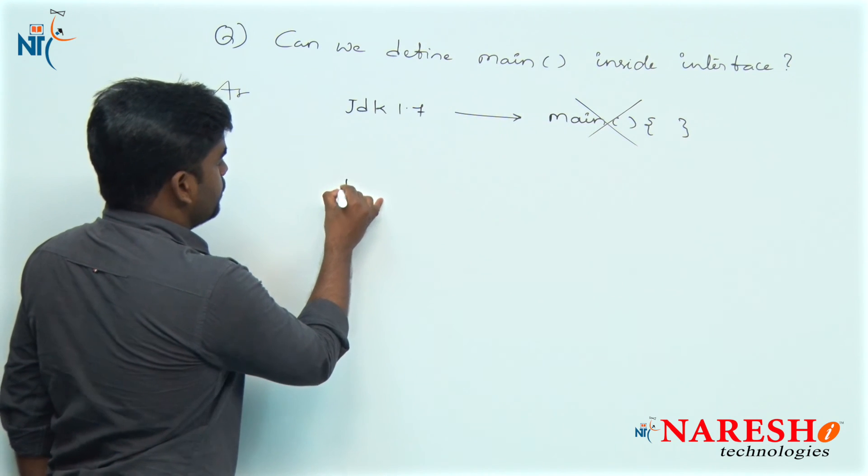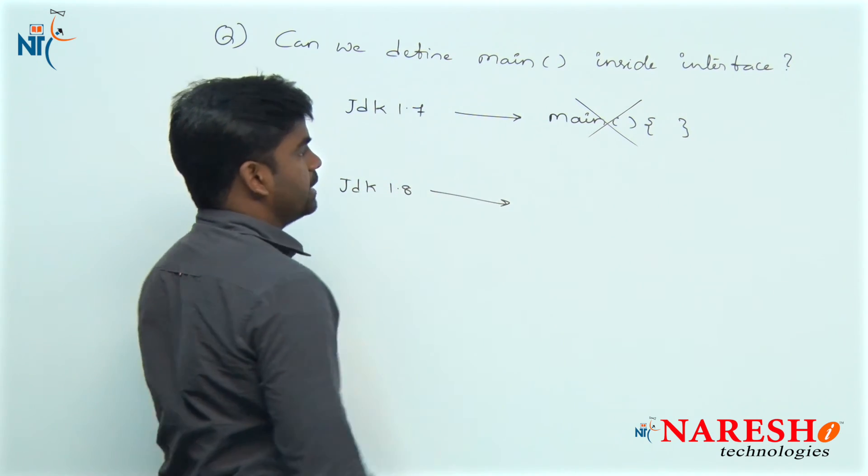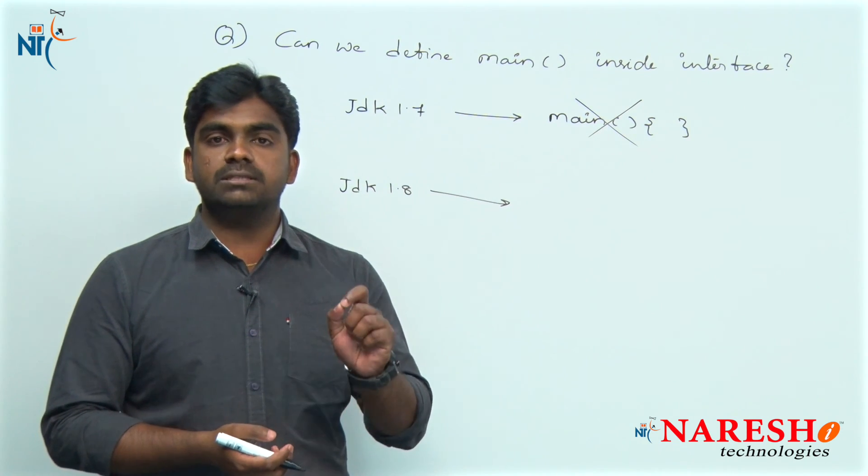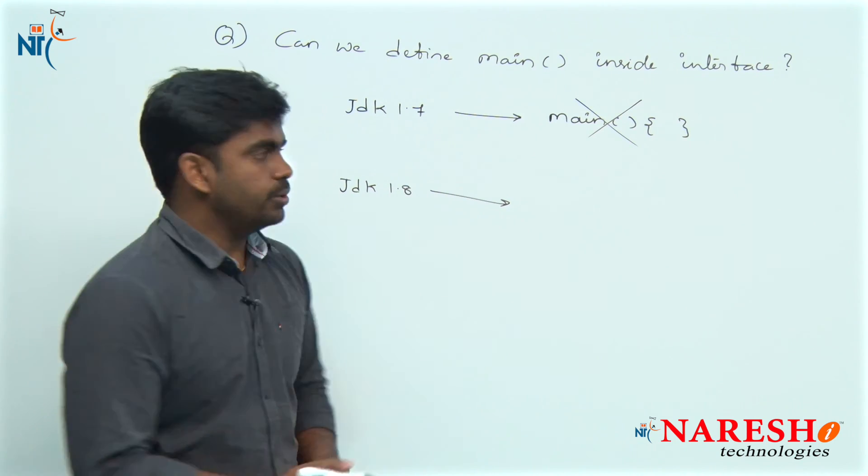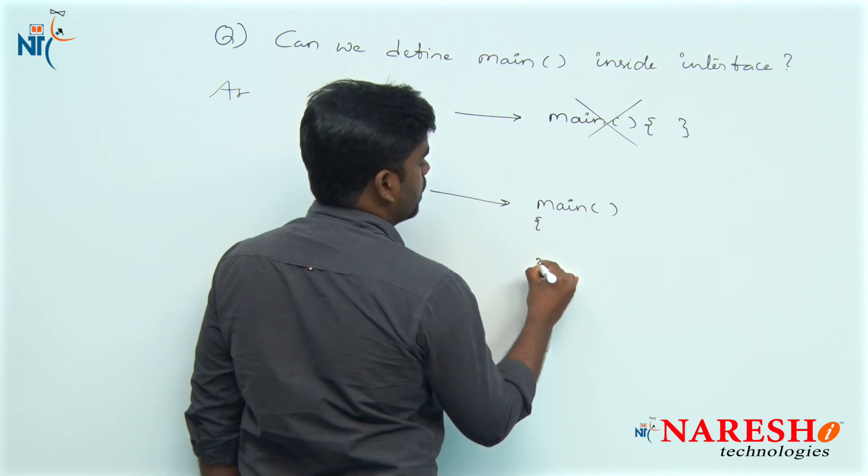But in JDK 1.8, they introduced the concept of static method definitions inside the interface. You can define main method inside the interface, it is allowed.